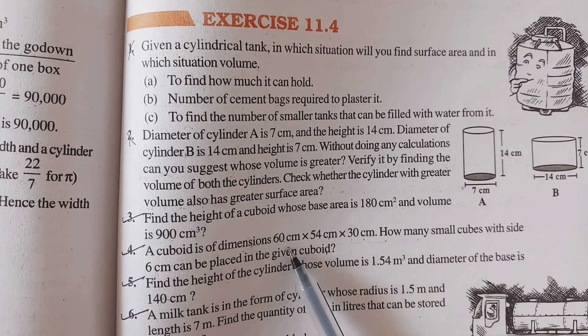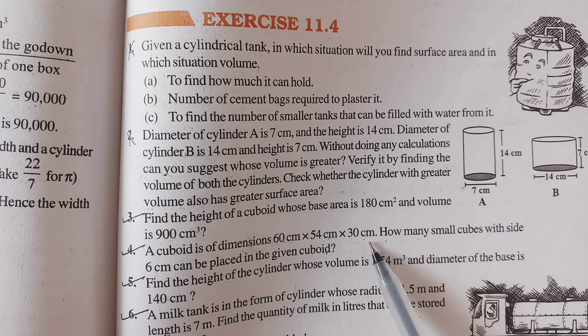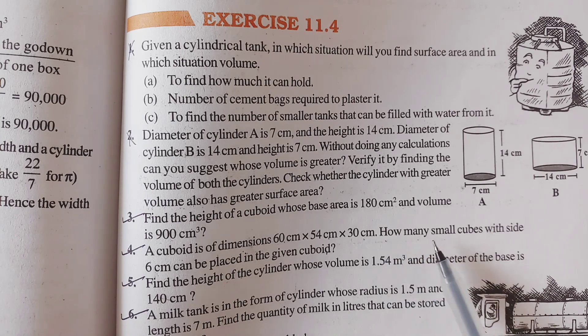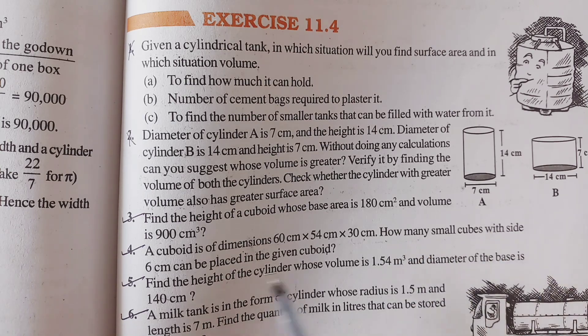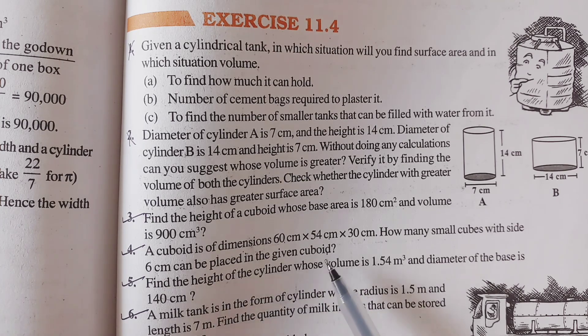A cuboid of dimensions 60 cm, 54 cm, and 30 cm. How many small cubes with sides 6 cm can be placed in the given cuboid?